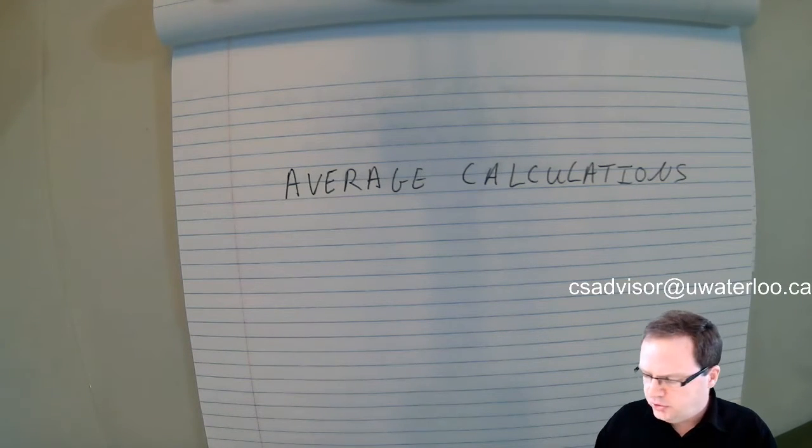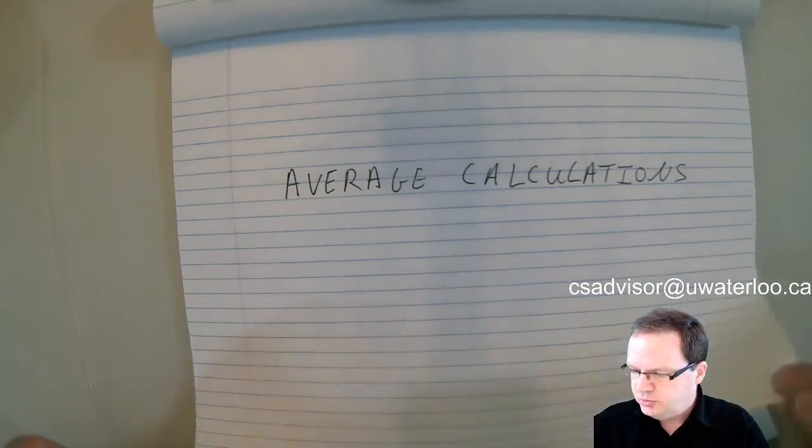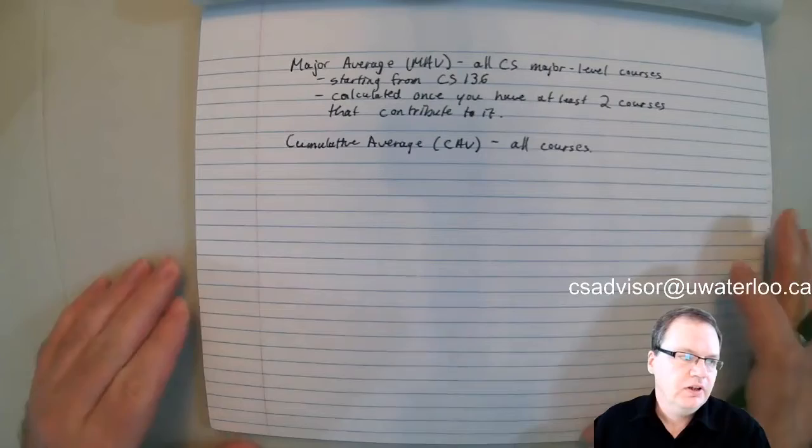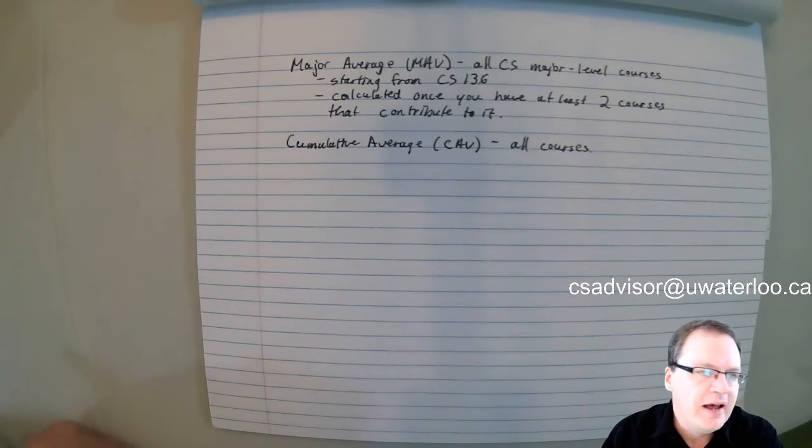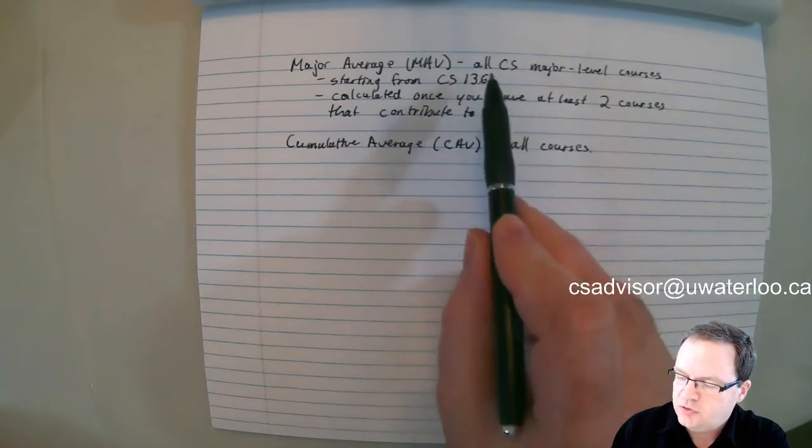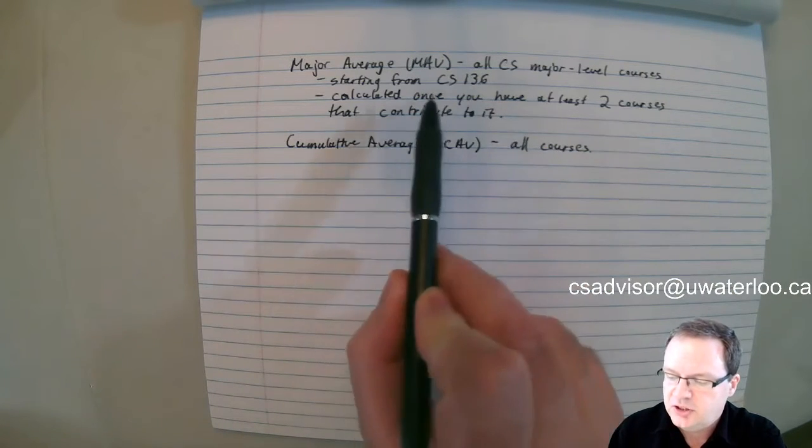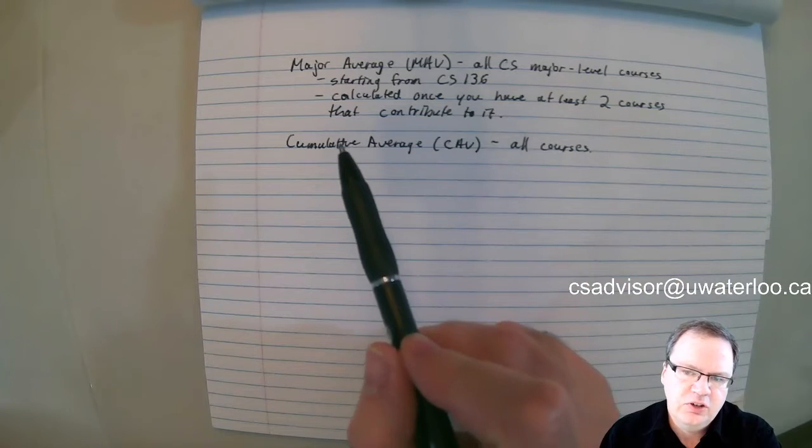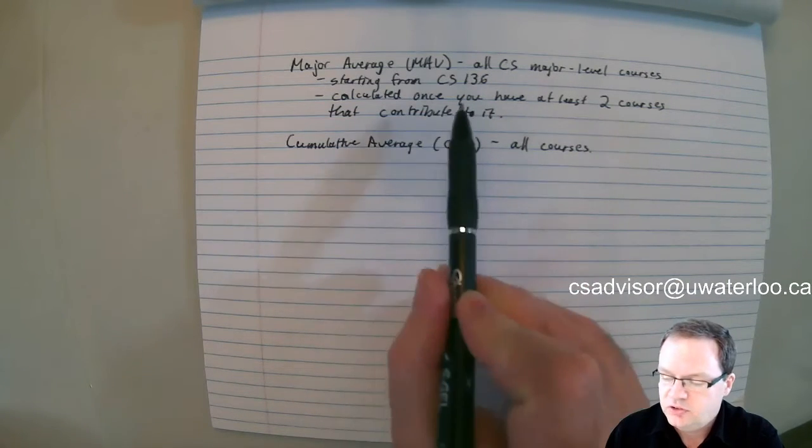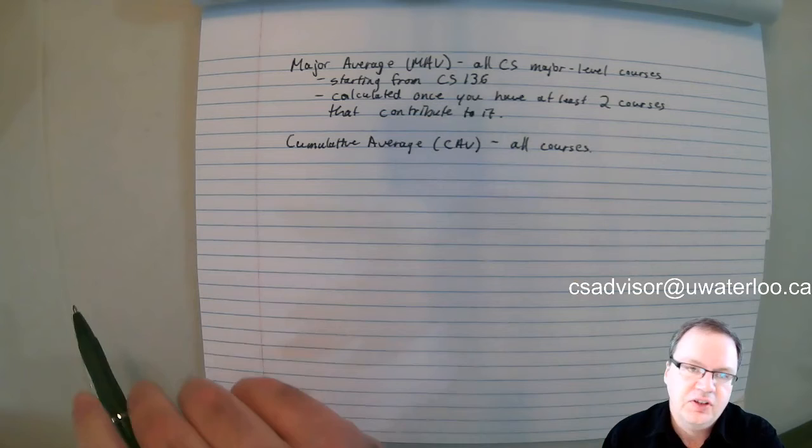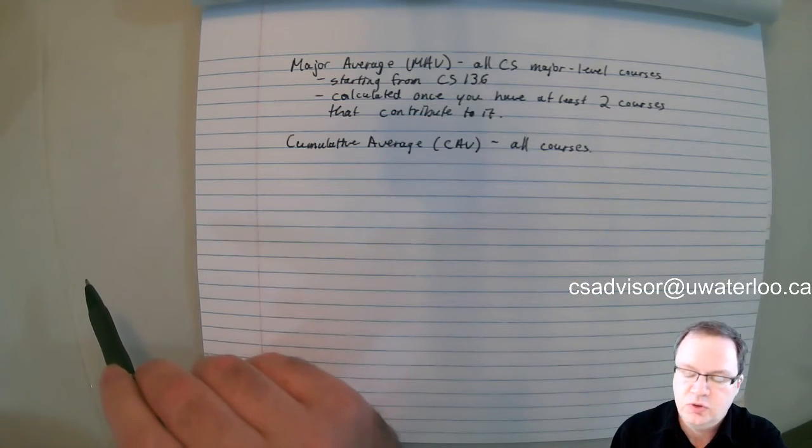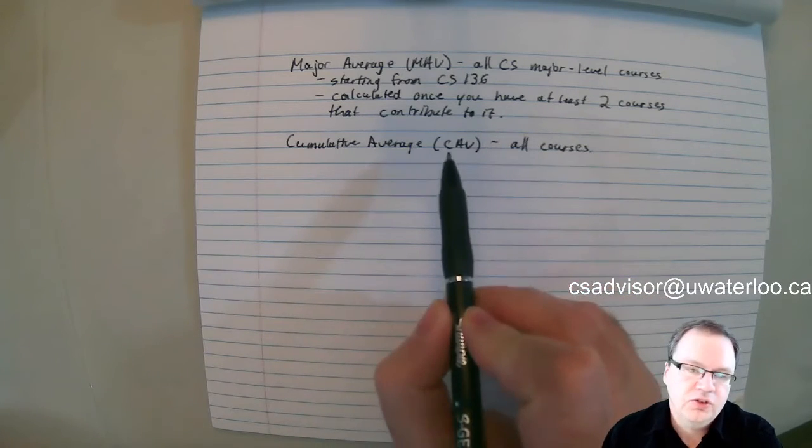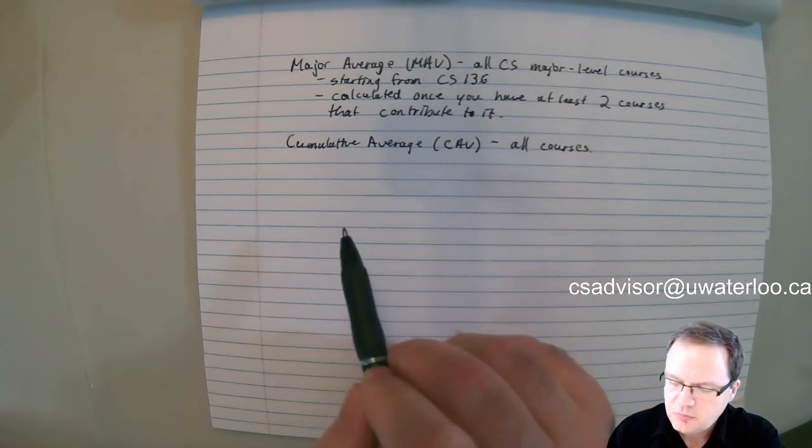I want to talk specifically about your averages and as a computer science student you have two relevant averages. The first one is your major average or your MAV, which is the average of all CS major level courses that you have taken starting from CS 136. So CS 135, 115, 116, 145, they don't count. Once you have CS 136 that's when we start calculating courses towards the average. And we calculate the MAV for you once you have at least two courses that contribute to it.